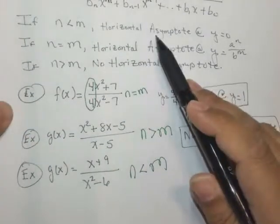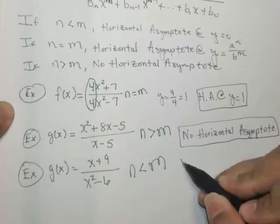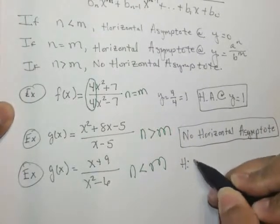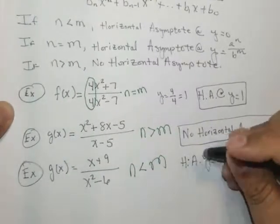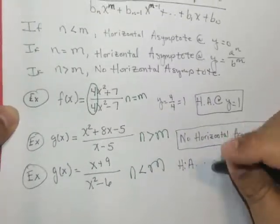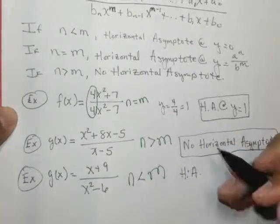n less than m says the horizontal asymptote is at y equals 0. So the horizontal asymptote at y equals 0. So let me just fix that.